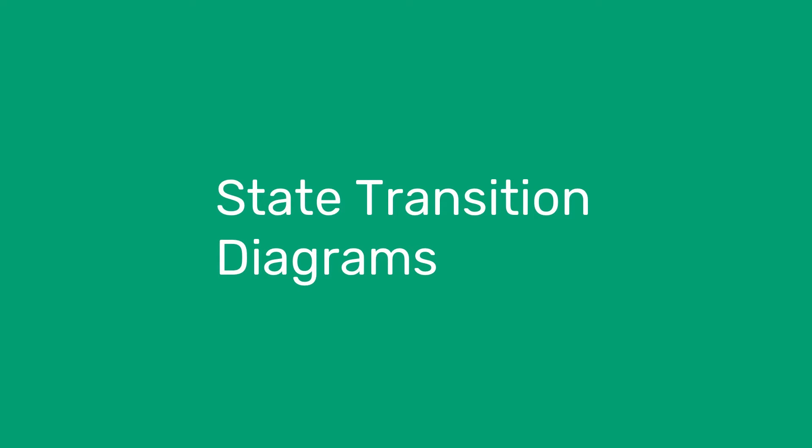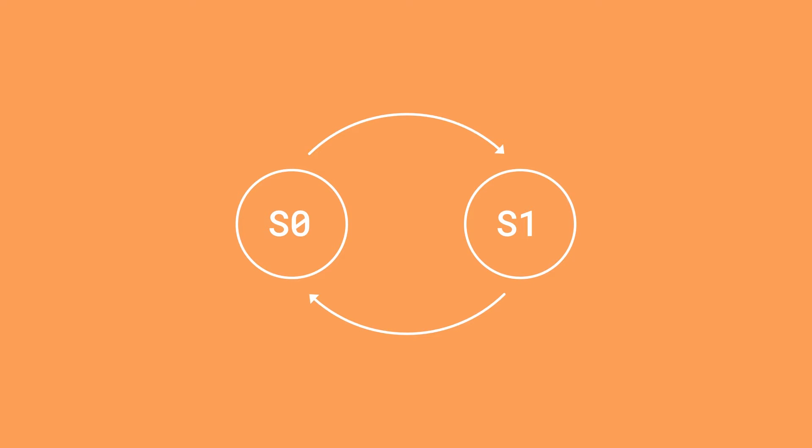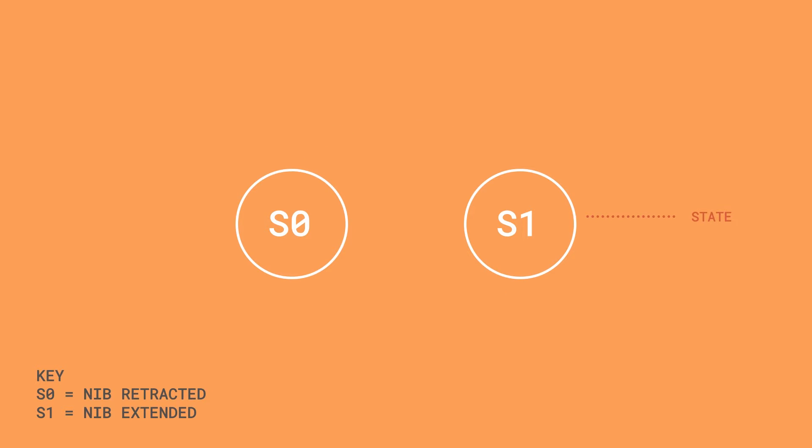Now we have some theory nailed down. Let's look at the first way we can represent FSMs, which is with state transition diagrams. These show the machine's behavior visually, and here's the state transition diagram for the ballpoint pen example we just talked about. A circle represents the state of the machine. As you can see, we have two states in this example, which are the pen either being retracted or extended. We've labelled the states S0 and S1, but we could add a key to connect meaning to them. Arrows represent a transition to a state, and we label them with the input that has triggered this transition.